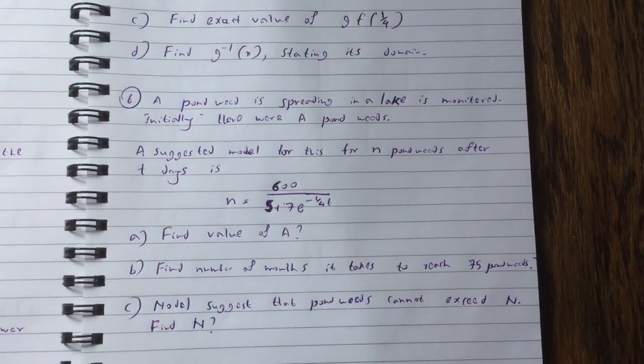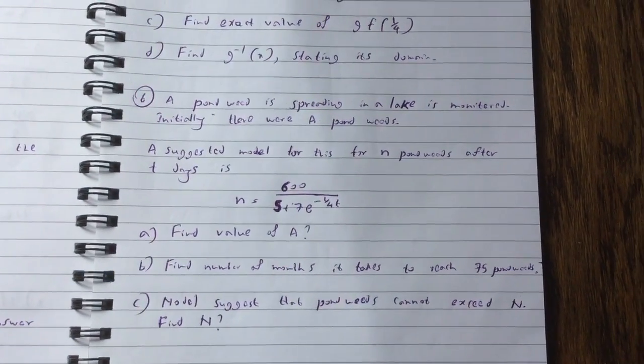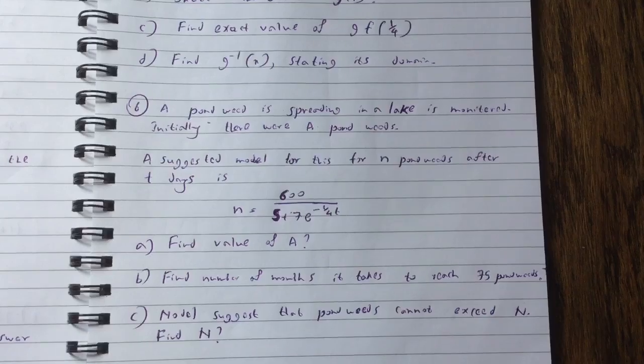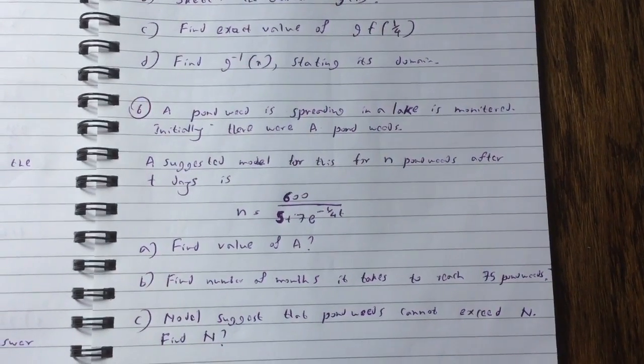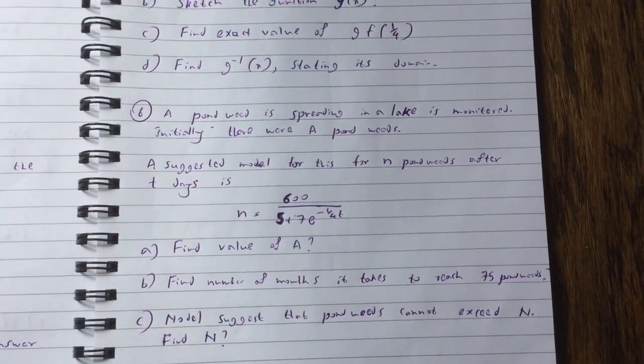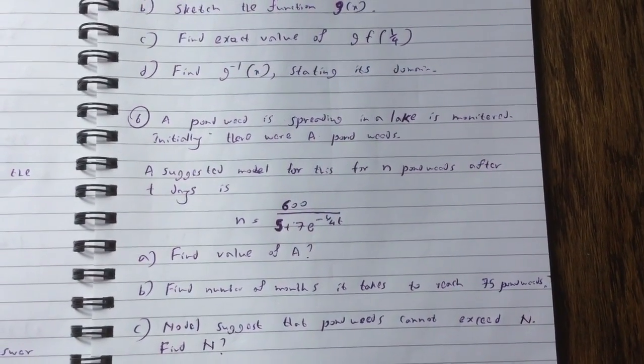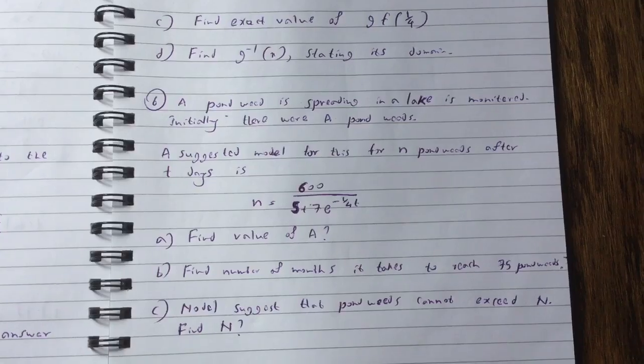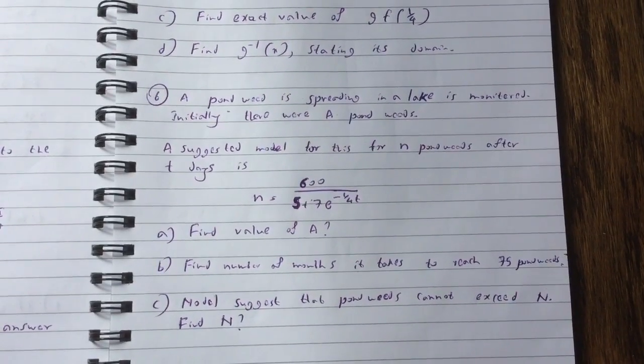Question 6, a pondweed is spreading in a lake is monitored. Initially, there were A pondweeds. The suggested model for this, for n pondweeds after t years is n equals 600 over 5 plus 7 e to the minus 1 over 4t.